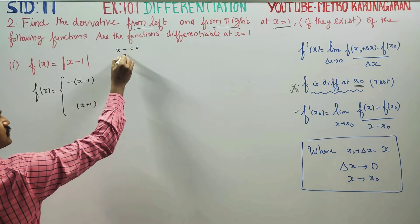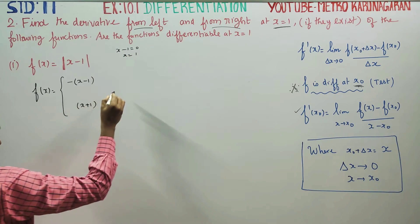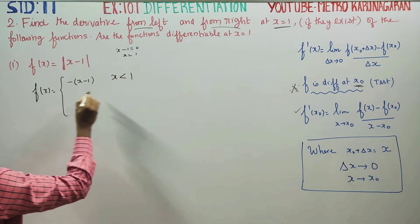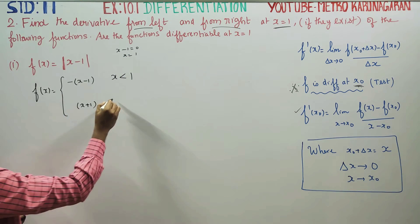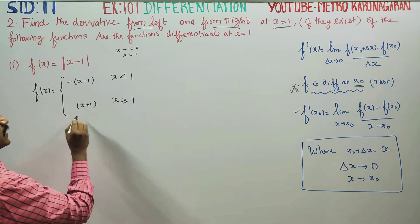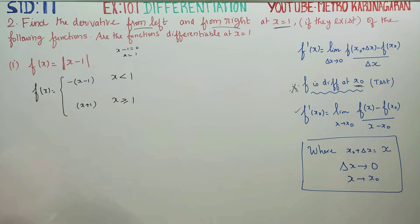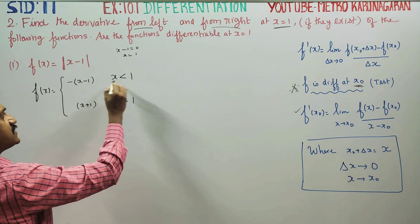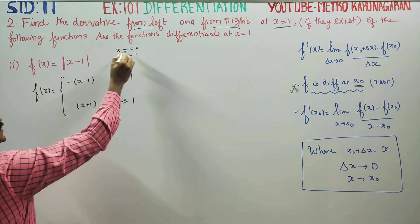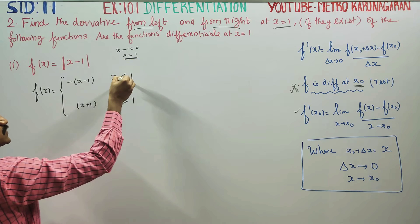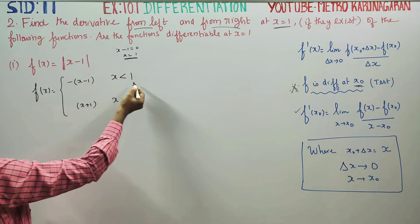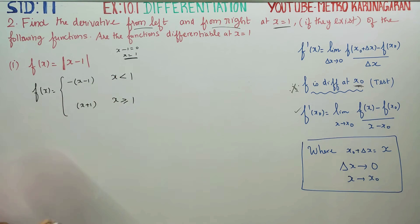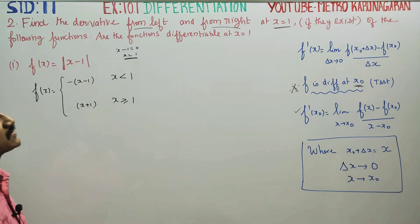Setting x − 1 = 0 gives x = 1. So when x is less than 1, the modulus |x − 1| = −(x − 1), and when x is greater than or equal to 1, |x − 1| = x − 1. This is the piecewise definition of the modulus function. Now we will start the calculation.